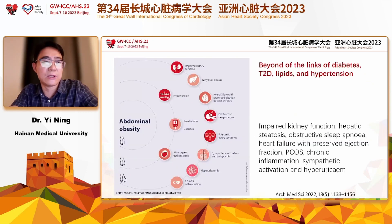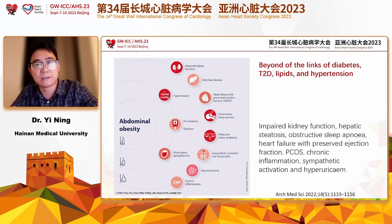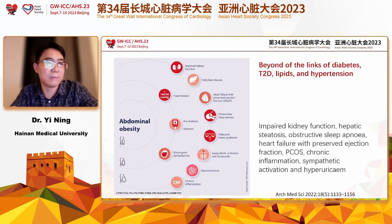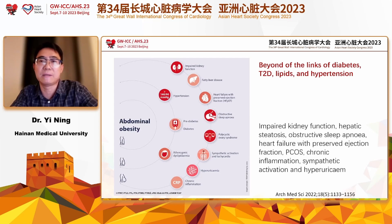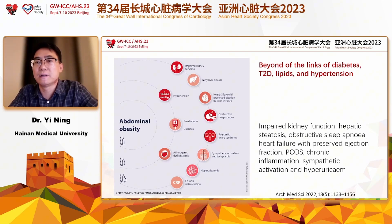As we reviewed the four conditions, they are connected with each other. Abdominal obesity can lead to hypertension, prediabetes, diabetes, and dyslipidemia. Beyond all the linkage between those conditions, impaired kidney function, steatosis, COPD, PCOS, chronic inflammation, systematic activation, and hyperuricemia also can and should be considered.